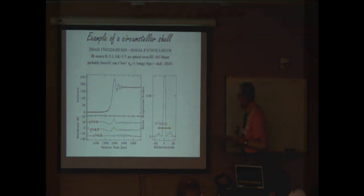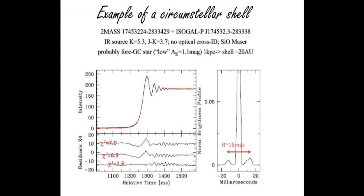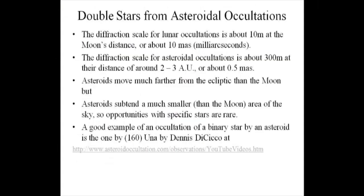Here's an example of an interstellar shell about 16 milliarcseconds across. That covers lunar occultations, but I also want to mention asteroidal occultations. The lunar occultations can be observed at any observatory — you get several a night when the sky is clear and the moon is up. Asteroidal occultations are less common, but if you are persistent you can observe maybe 10 of them a year from a given observatory. The diffraction scale for lunar occultations is about 10 meters at the moon's distance, or about 10 milliarcseconds. For asteroidal occultations it's about 300 meters at their greater distance of two to three astronomical units, or only about 0.5 milliarcseconds — about 20 times better than lunar occultations for resolution.